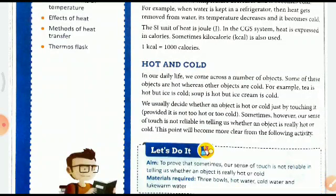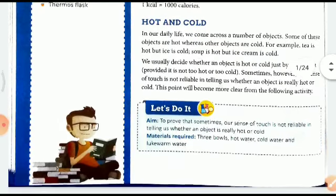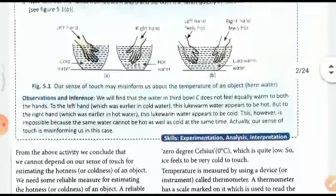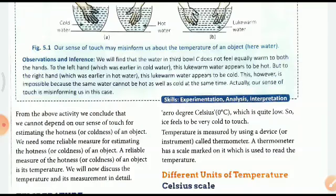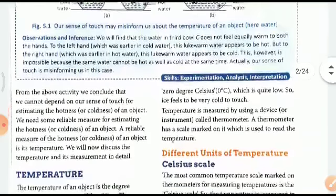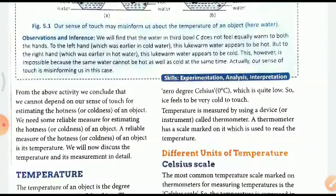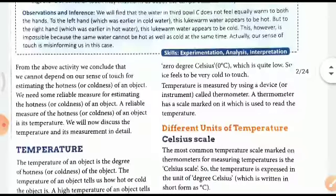Usually we decide if anything is hot or cold by touching it. Sometimes our sense of touch is not reliable to tell us whether it is hot or cold, then we need certain equipment. From the above we can conclude that we cannot depend on our sense of touch for estimating the hotness or coldness of an object.